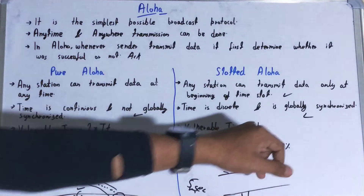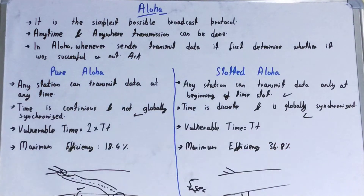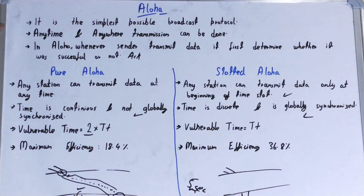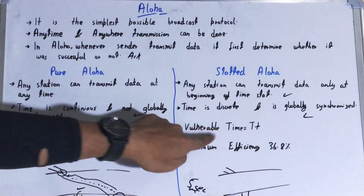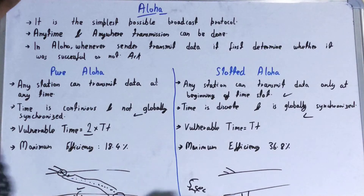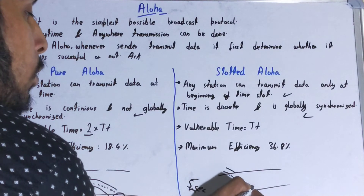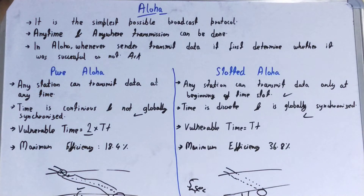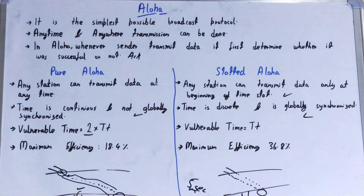The vulnerable time in slotted ALOHA is T — just one frame time — whereas in pure ALOHA it was 2T, so the vulnerable time is halved. Vulnerable time is the time needed to send the packet from the sender to the receiver. The efficiency of slotted ALOHA is approximately 36.8%, which is double that of pure ALOHA, because the number of collisions in slotted ALOHA is half compared to pure ALOHA.